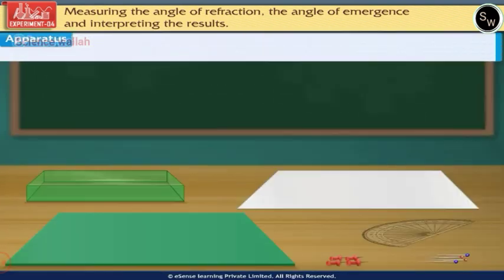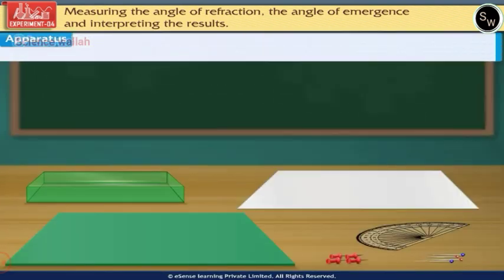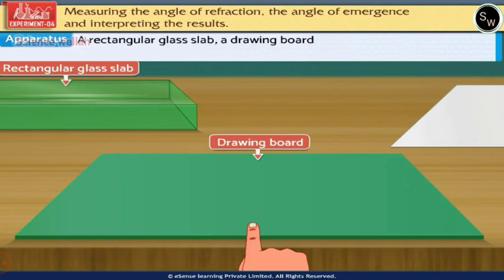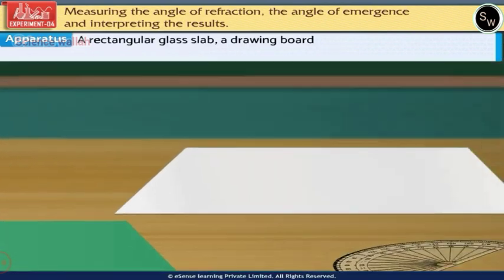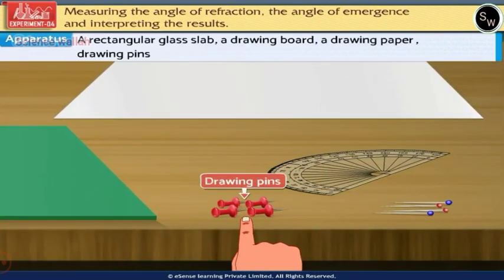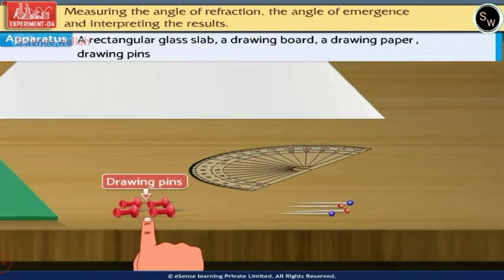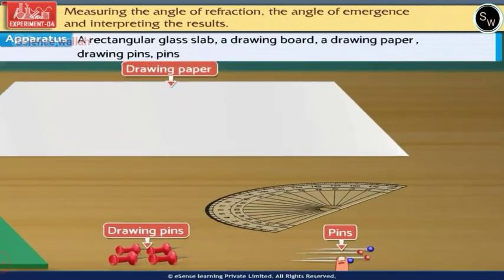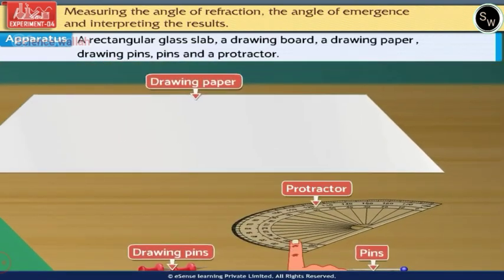The apparatus required to perform this experiment are a rectangular glass slab, a drawing board, drawing paper, drawing pins, pins, and a protractor.